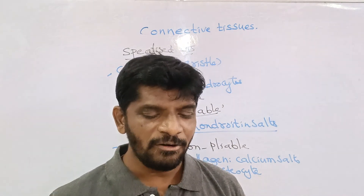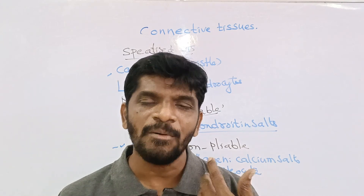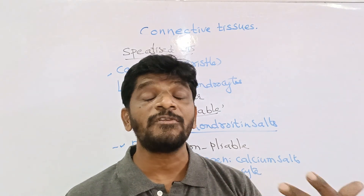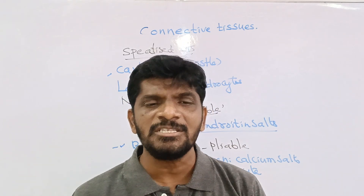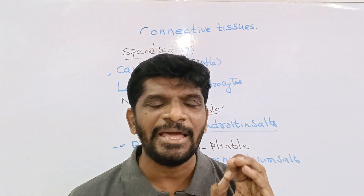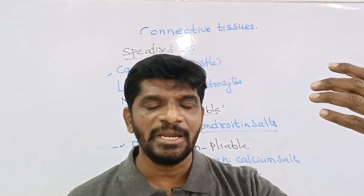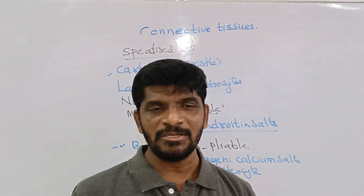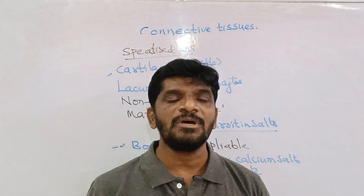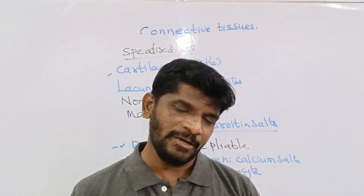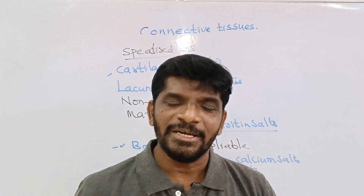Blood is a fluid connective tissue containing plasma and formed elements. We will discuss it further in the circulatory system. I have now completed the specialized connective tissues — cartilage, bone, and blood. Thank you for watching this class, I hope you understood it.